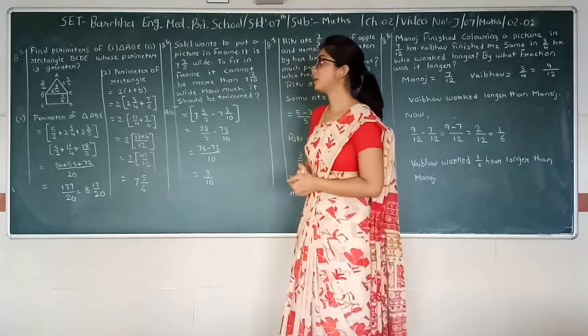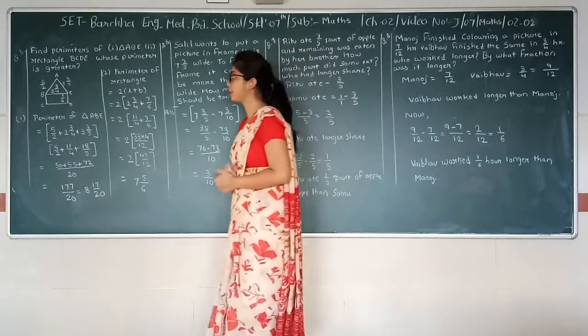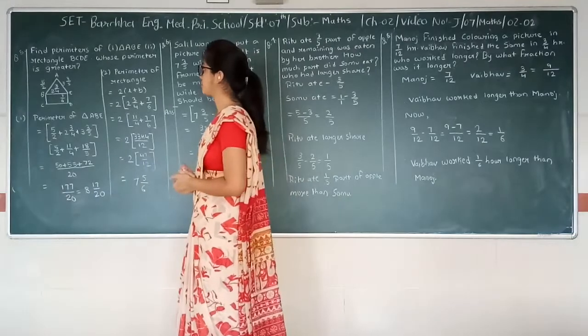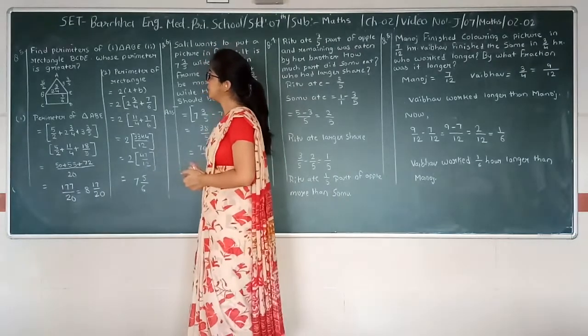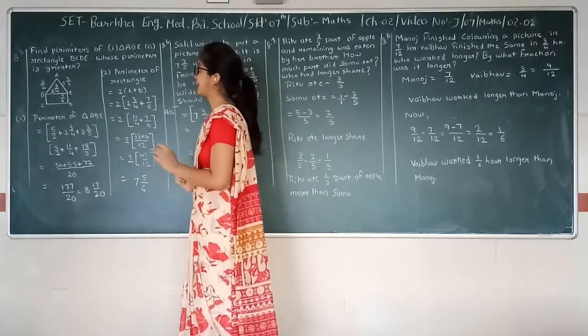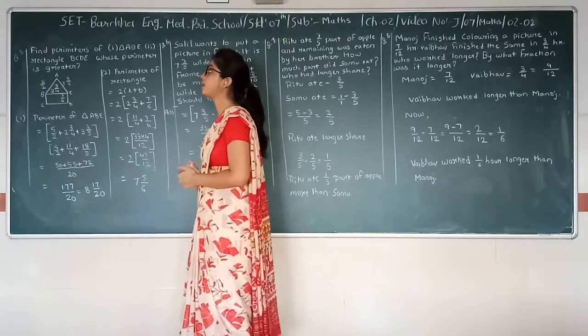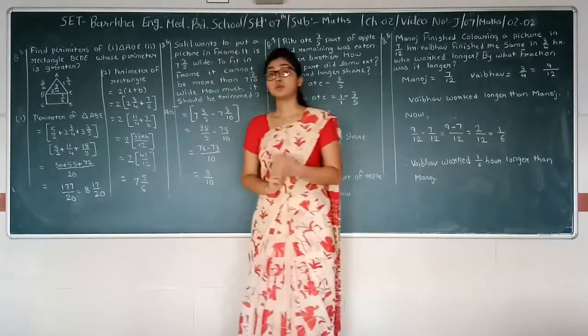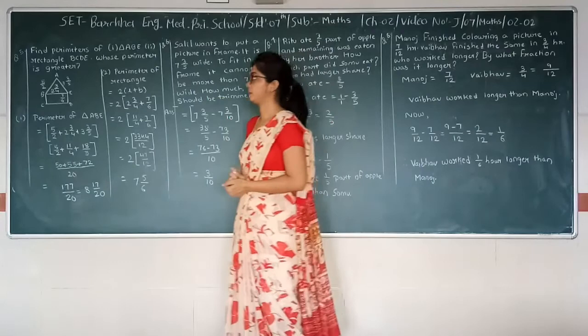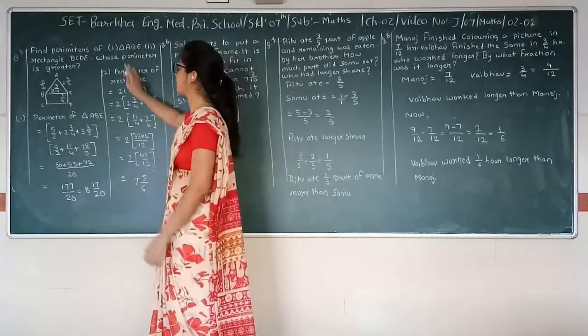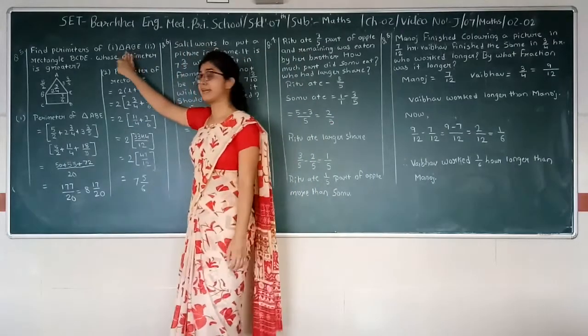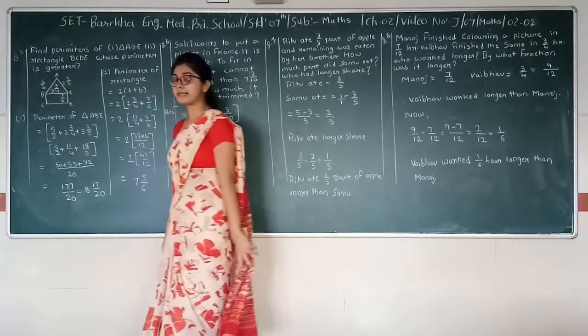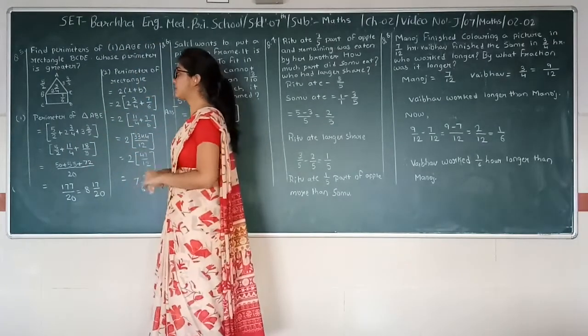Let us continue with question number 5, find parameters of first one, triangle ABE and second one, rectangle BCDE, whose parameter is greater. We have to find parameter of triangle as well as of rectangle. We have sides, we have length and breadth and also sides.